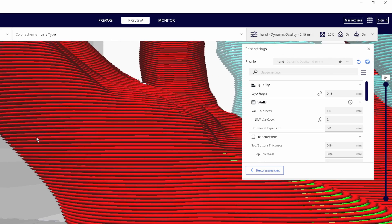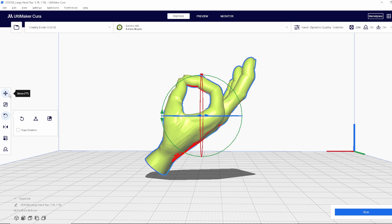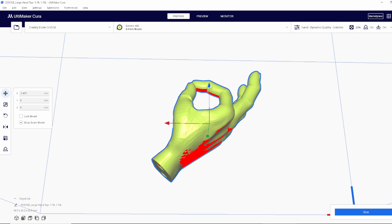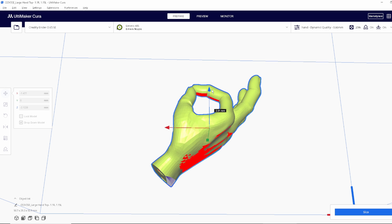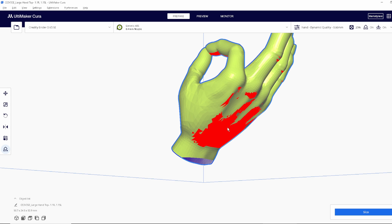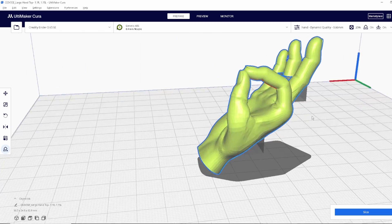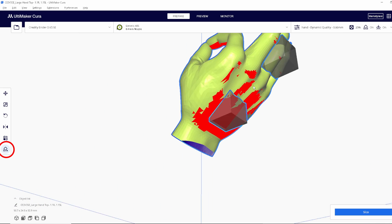Now it's time to create that flat edge by pushing your model through the build plate. Depending on what you have your support overhang angle set to, you'll notice there are a bunch of red areas on your model where Cura is going to place supports. It's easy to remove the supports you don't want by using a support blocker.